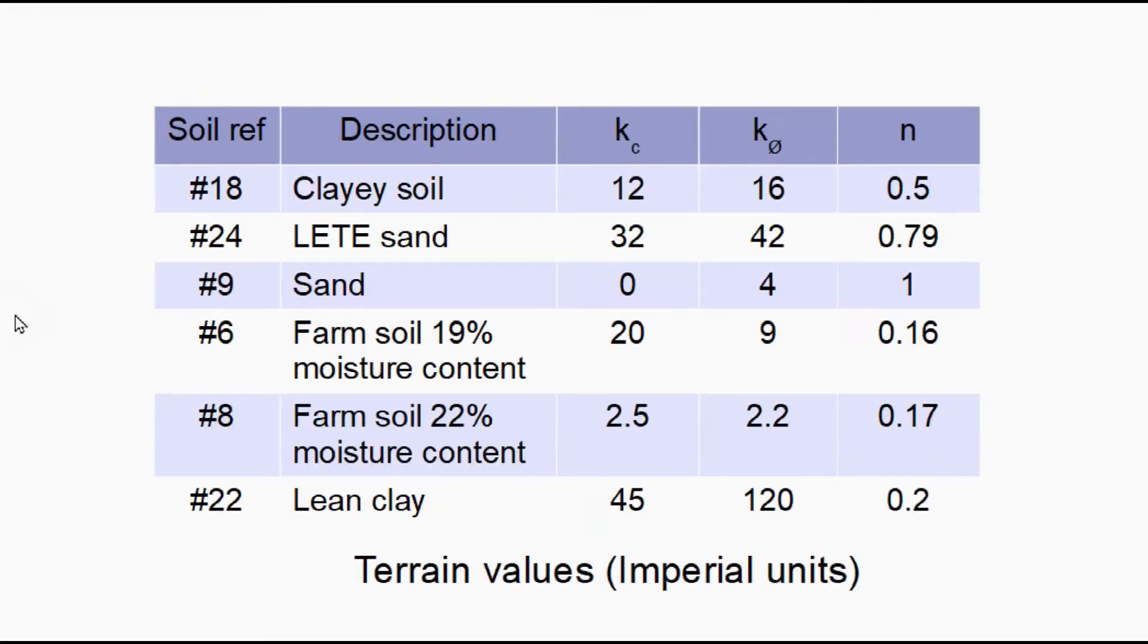I've also taken a range of soils. Don't worry too much about these numbers which are the sinkage parameters, but suffice it to say the bigger the number the stronger the soil. This is a fairly average clay loam. This turns out to be a very stiff sand whereas this one is actually a very weak sand almost like ball dust. I've taken a couple of farm soils at differing moisture contents and also a very firm clay.